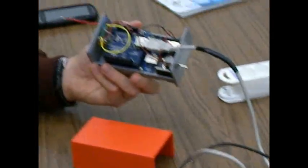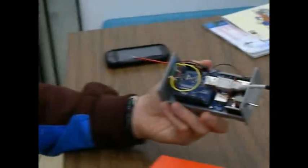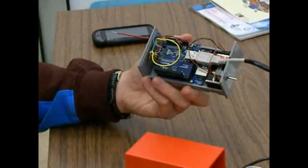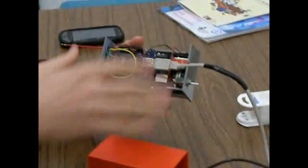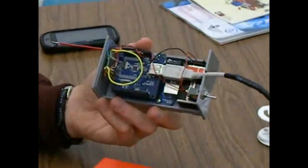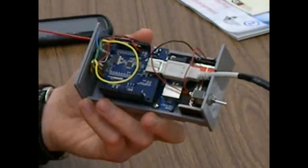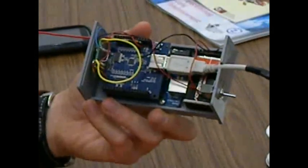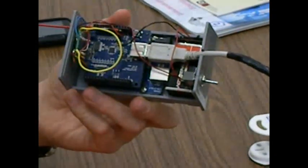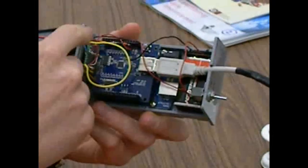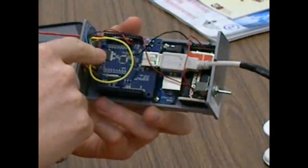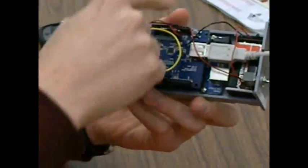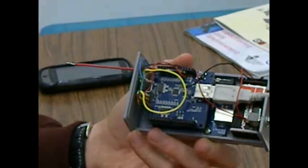So what we created is a device that lets you see these electromagnetic fields. The device is based on an Arduino board, which is a great piece of electronics that lets you prototype things. And we added two sensors to this Arduino board. One sensor is used for detecting high-frequency fields, and the other one for detecting low-frequency fields.